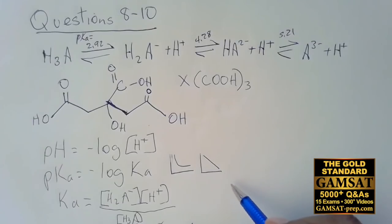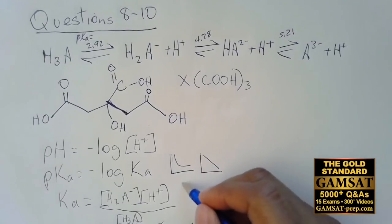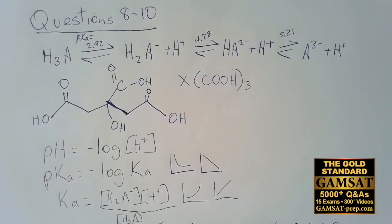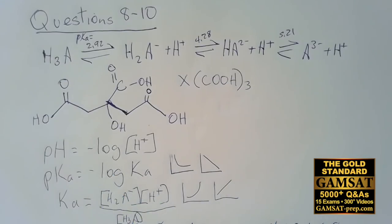It's the negative sign that makes it so that when Ka increases pKa decreases, when Kb increases pKb decreases, when hydrogen ion concentration increases pH decreases, and when OH⁻ concentration increases pOH decreases — always opposites because of that negative sign relationship.